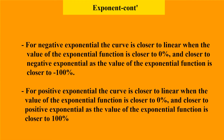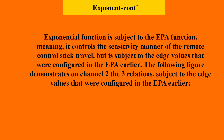For negative exponential, the curve is closer to linear when the value of the exponential function is closer to 0%, and closer to negative exponential as the value is closer to 100%. For positive exponential, the curve is closer to linear when the value is closer to 0%, and closer to positive exponential as the value is closer to 100%. The exponential function is subject to the EPA function, meaning it controls the sensitivity of the remote control stick travel, but is subject to the edge values configured in the EPA.